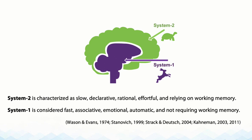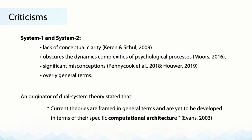System 1 is considered evolutionarily old — it's fast, associative, emotional, automatic, and does not require working memory. System 2 is thought to be more evolutionarily recent, considered to be slow, declarative, rational, effortful, and relying on working memory. This is how System 1 and System 2 is thought to represent deep characteristics of human cognition.